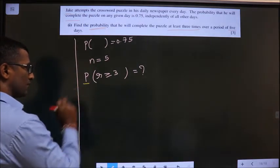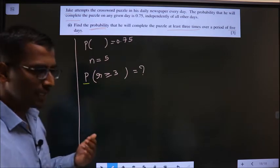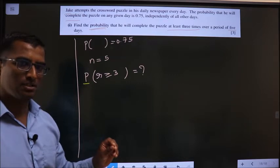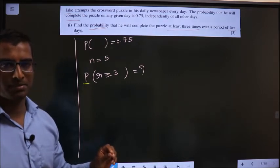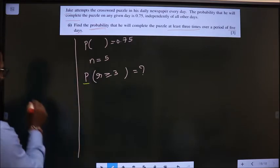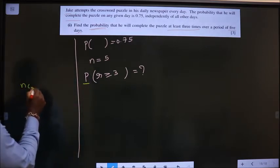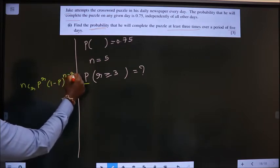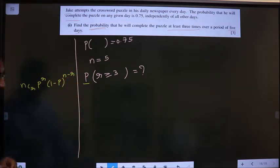To find out this probability, I should get the idea of using binomial distribution. The formula for binomial distribution is nCr p^r (1-p)^(n-r).